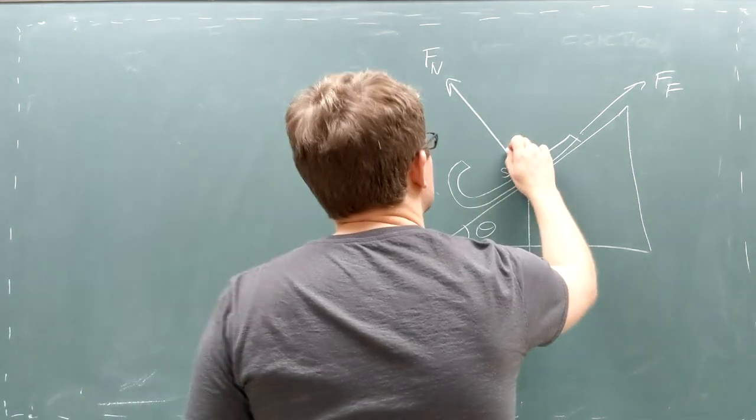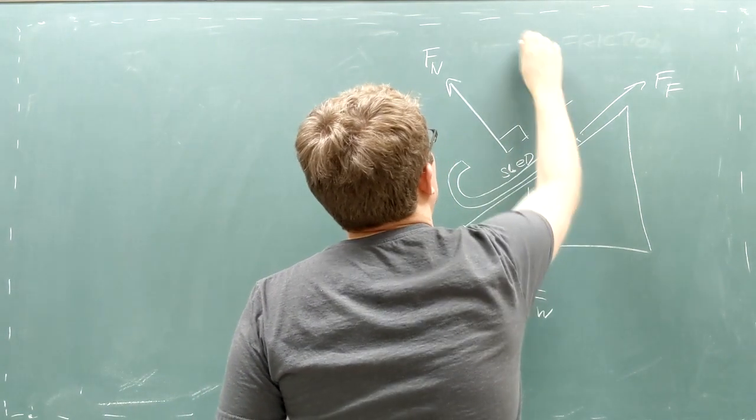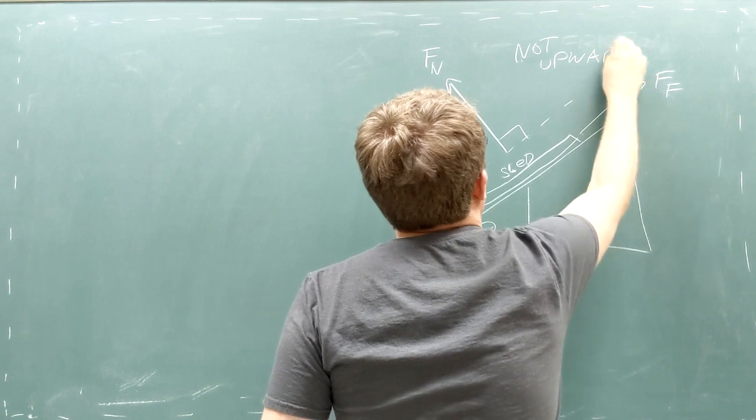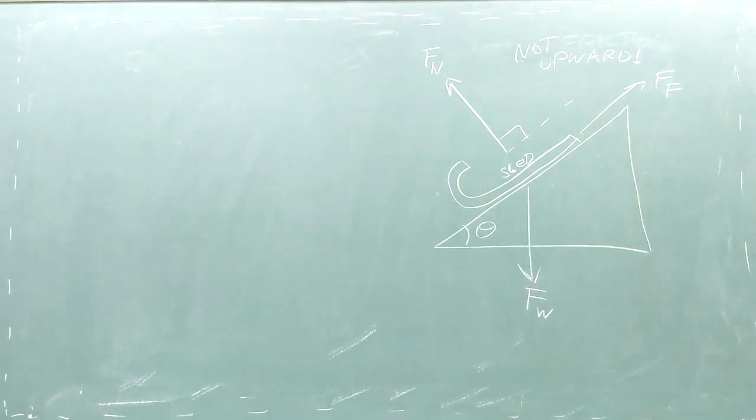there's the normal force of the ground pushing on the sled. The normal force points at a 90 degree angle from the sloped ground. That's why we call it the normal force, not the upward force.